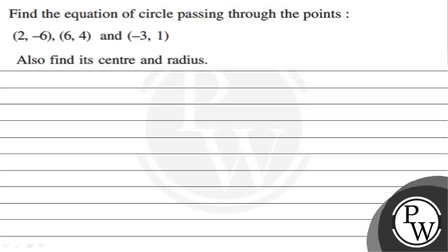Hello Bachchano, let's read the given question. The question states: find the equation of the circle passing through the points (2, -6), (6, 4), and (-3, 1). Also find its center and radius.